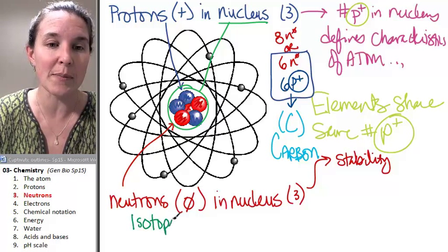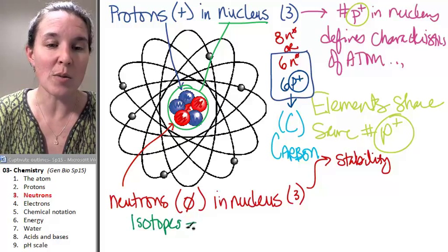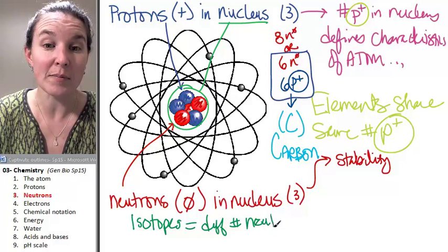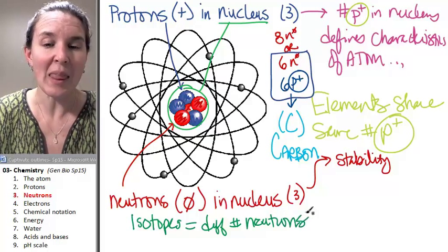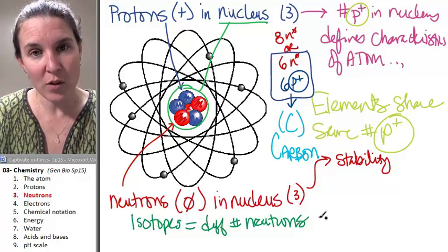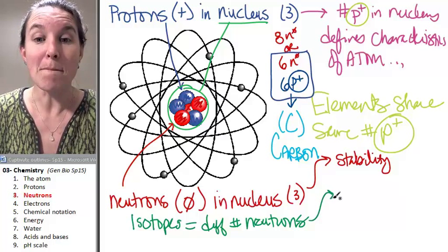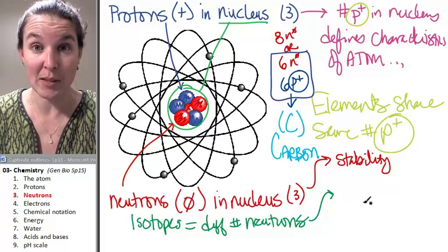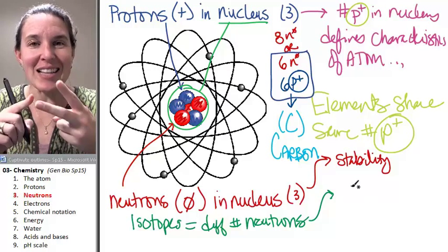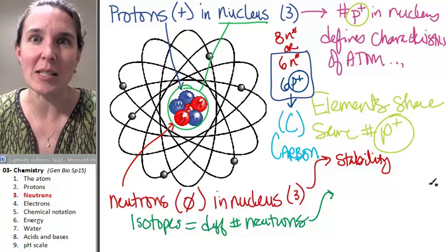those are called isotopes of each other, isotopes of carbon. Isotopes have different numbers of neutrons. And you're probably going, really? But I'm going to give you something that probably you are familiar with.